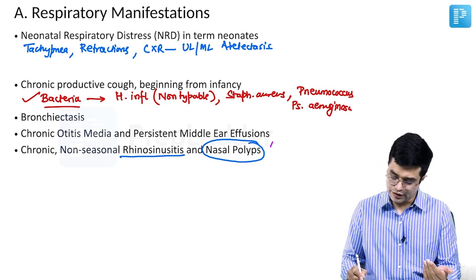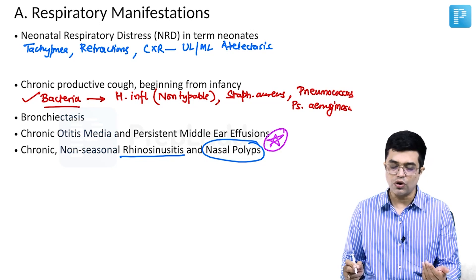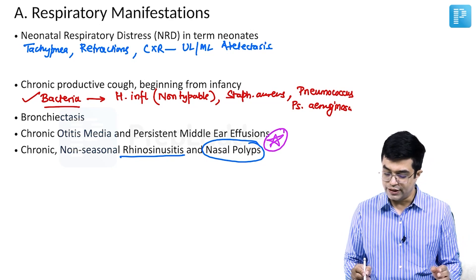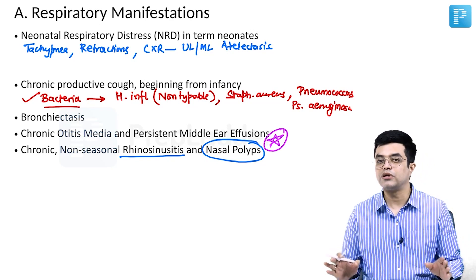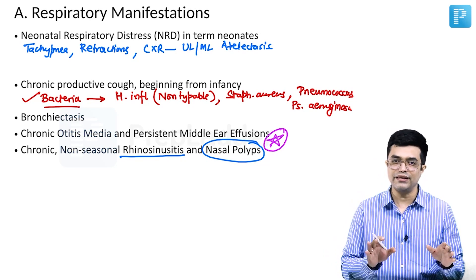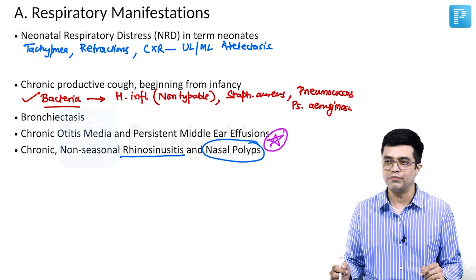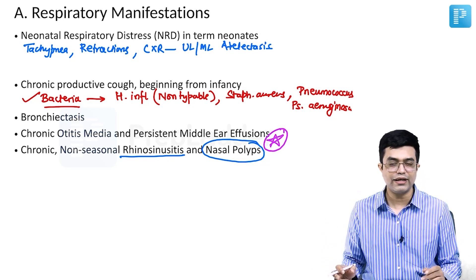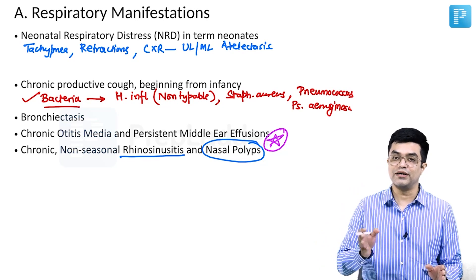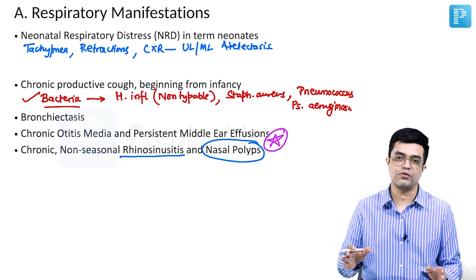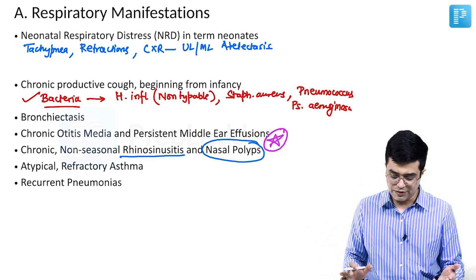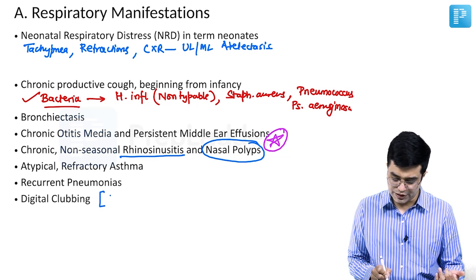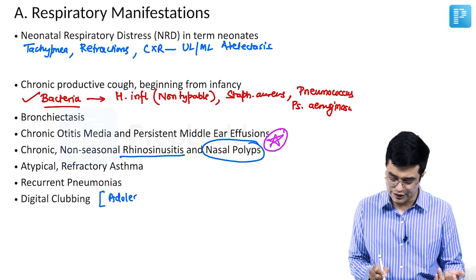Why stress this? 'Which of the following is not seen in Kartagener syndrome?' is an old super-specialty MCQ. Nasal polyp was an option and was NOT the answer — nasal polyps are indeed seen and are a common feature. Many students got it wrong thinking Nelson's table doesn't mention it, but the text does. Atypical refractory asthma and recurrent pneumonias can also be seen, and digital clubbing appears in the adolescent period, not in early childhood.